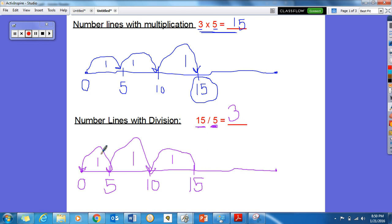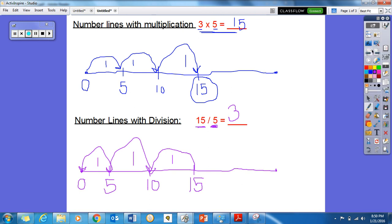So 1, 2, 3. So 3 times 5 is 15, and 15 divided by 5 is 3. Now you'll notice that these are related facts for each other. So when you find the equation from a number line, remember that you're going to be looking for some related facts. So let's go on to find equations from a number line.